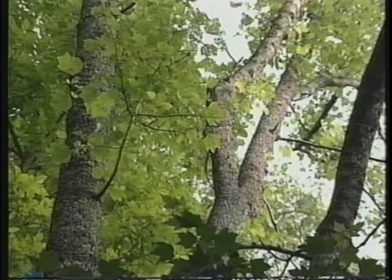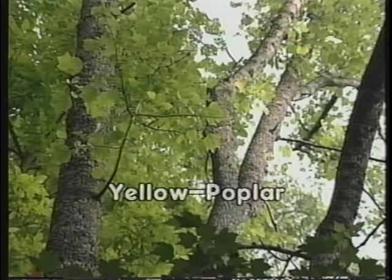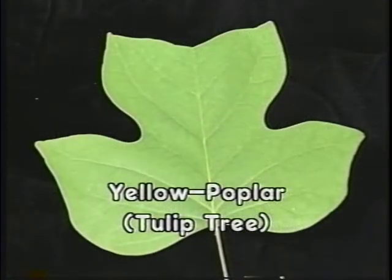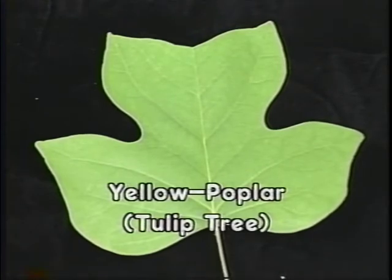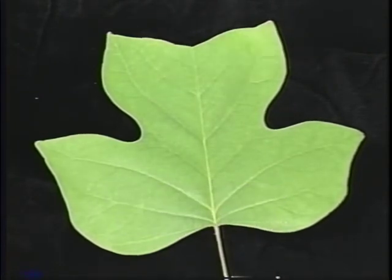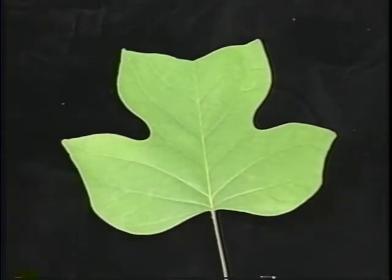Yellow poplar, also referred to as the tulip poplar or tulip tree, is a very valuable tree to Kentucky. The wood is used extensively in the furniture industry because of its abundance and ease of workability. The shape of the leaf gives it the name tulip poplar — the leaf looks like the profile of a tulip. There are four lobes with a flat top. The simple leaf is arranged alternately on the twigs and has an entire margin.